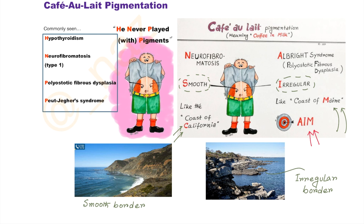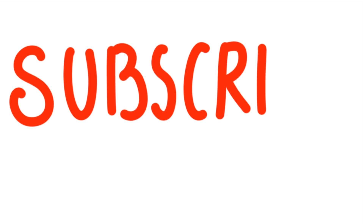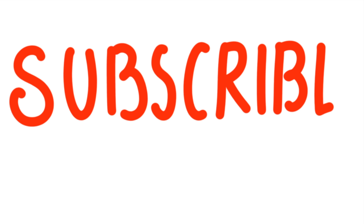Hope you like this video. Café-au-lait pigmentation can also be seen in many other diseases — please comment below the other diseases in which café-au-lait pigmentation is seen. That's all guys. Please like, comment, and share, and don't forget to subscribe. Thank you.